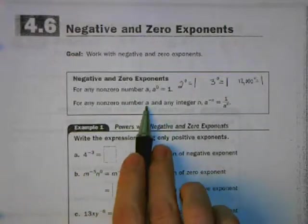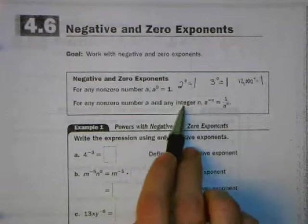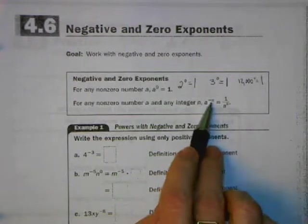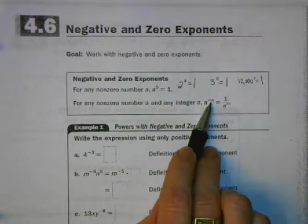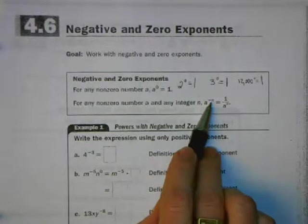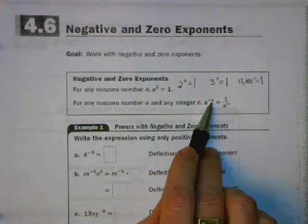For any non-zero number a, that means that the base here can't be zero, and any integer n, that means the numbers that we put on the exponents aren't going to be fractions. So we're not going to have, for example, 2 to the 1 third power, or 2 to the pi power. The numbers that are our exponents are going to be integers: 0, 1, 2, 3, 4, negative 1, negative 2, negative 3, etc.